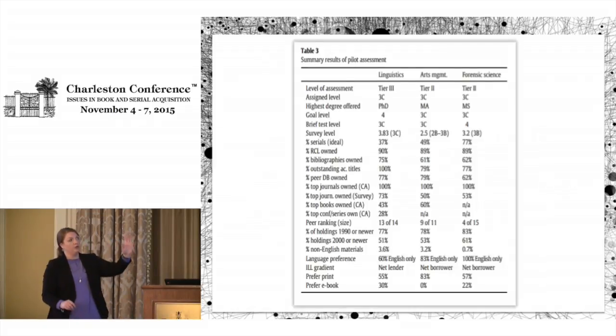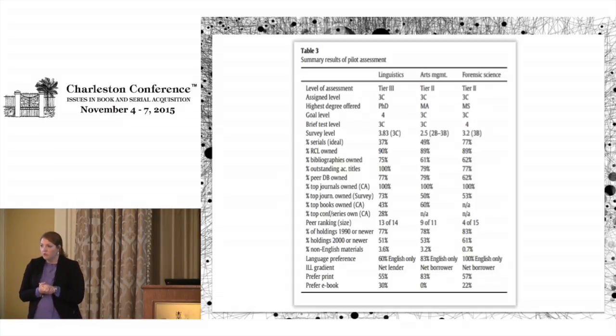So they went through, here are three different subjects. We have linguistics, arts management, and forensic science. And then they applied multiple different collection assessment methods to each discipline to determine what to do next. So I'm going to talk through this slide because there's a lot here. They determined where they were now, assigned level 3C. They determined the level of assessment means how much assessment they wanted to do. And that was determined by the person who was doing the assessment. One person. They had one person doing the assessment working with each of their liaison librarians to determine how much assessment needed to be done.